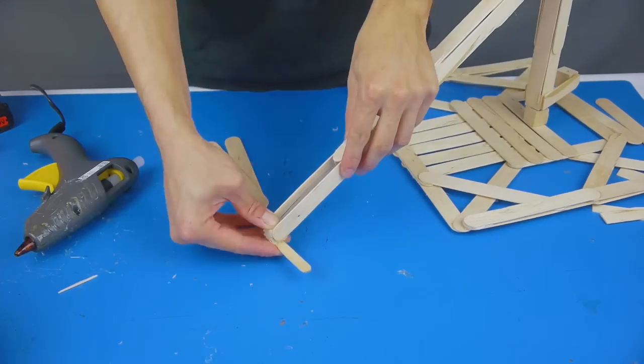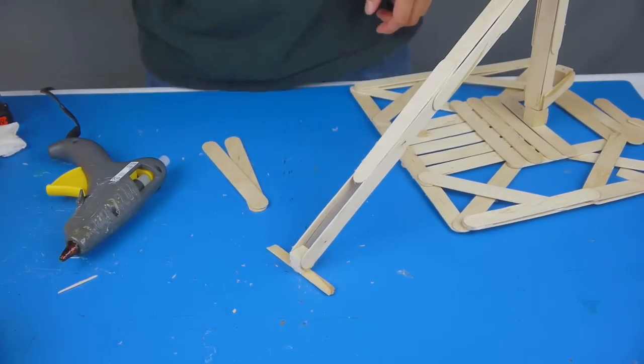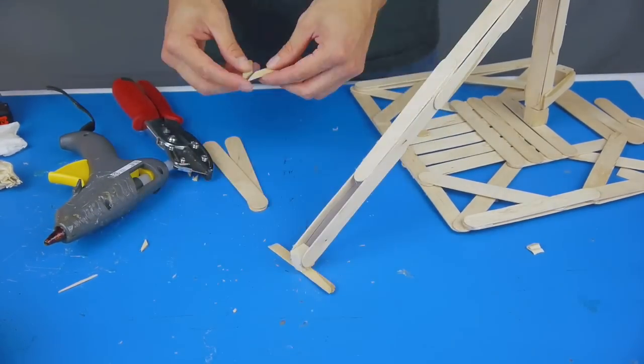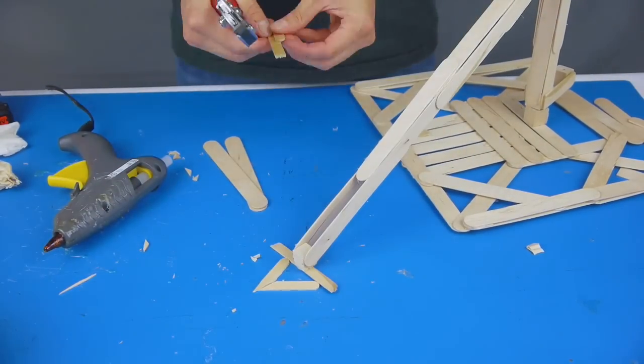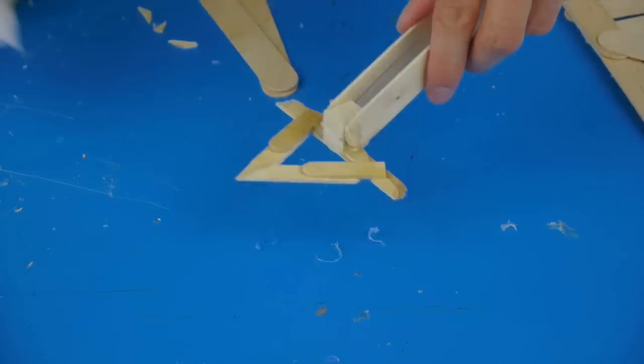The tip of the fighting arm is what will come into contact with your opponent most often, so the way you design it is very important. This example uses a thin triangular wedge that rests flat against the ground. It's specifically designed to get under the opponent's base and flip them over.